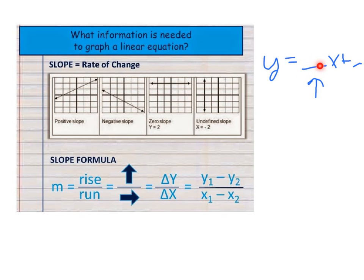You may need to calculate the slope number to put into the equation, and there are a couple of ways to do it. If you're working on a graph, you can calculate it by counting how much you're rising over how much you're running between two points, and look to see if it's a positive or negative line. Or you can use the slope formula, where you subtract two y-values on top and subtract their two corresponding x-values on the bottom.